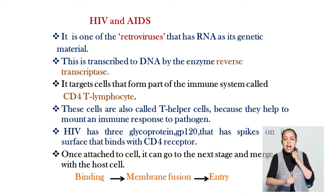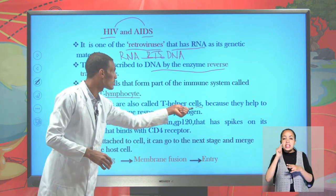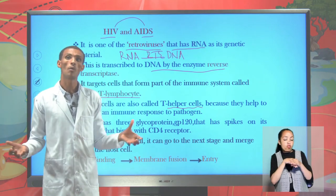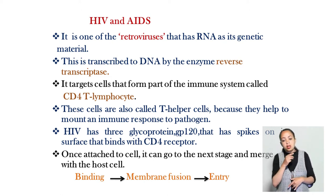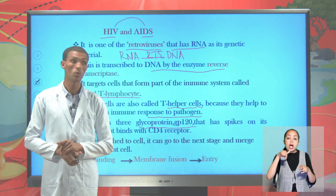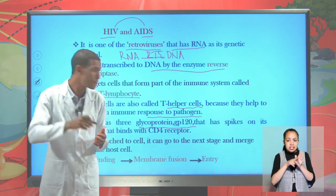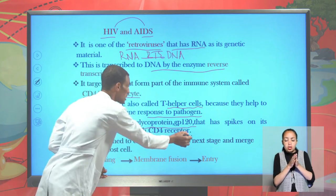This virus affects the CD4 immune-coordinating cell. We call it CD4 T-lymphocytes, and they are said to be T-helper cells, because they are involved in mounting or coordinating the immune system to defend against pathogens. One critical thing you must identify is there is a special protein called glycoprotein 120 on the surface of this retrovirus — a spike found on the surface of the viral particle that can bind complementarily with the CD4 receptor of an individual.